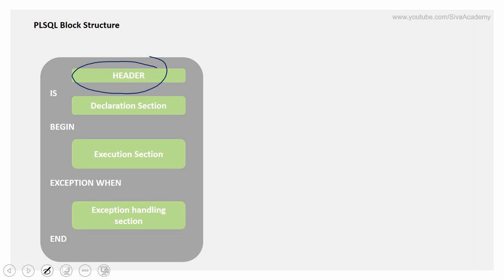The declaration section is also optional. If there is no variable to declare, then there's no need for a declaration section. This is followed by a mandatory execution section, which starts with the BEGIN keyword. There is an optional exception handling section — if you are not handling the exception, it will be thrown back to the user or the caller of the program. Then there is the mandatory keyword END.